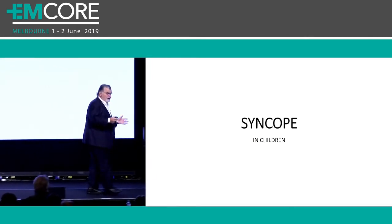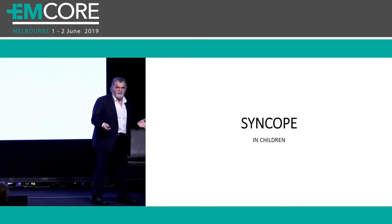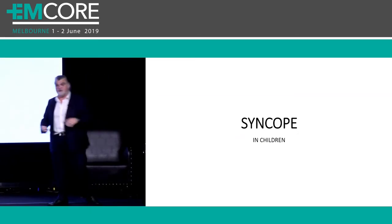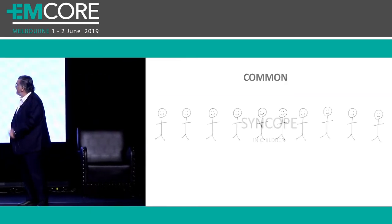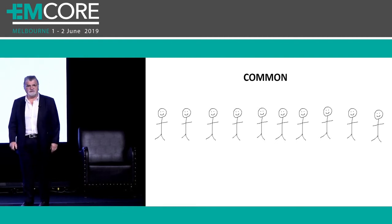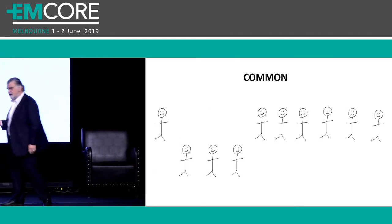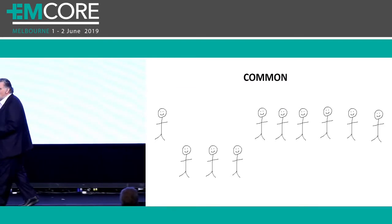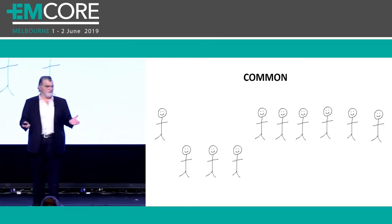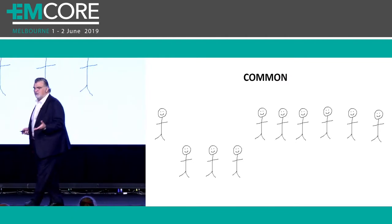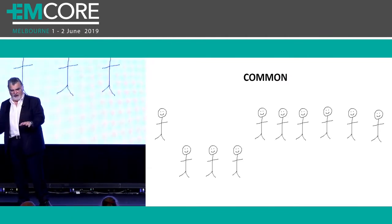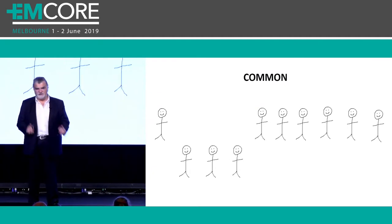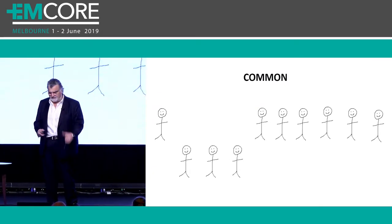Syncope in kids. I spoke about syncope in adults at the cardiac boot camp — there are a couple of videos that are exactly the same — but it's very important. Syncope in kids is about the same as syncope in adults. About 30% of these kids are going to have a syncopal episode by the time they're teenagers, and most of them are not going to be significant or serious. We get paid for not missing the serious ones — that's what we have to pay attention to.